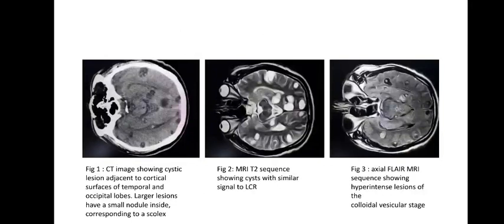The first image shows a CT image showing cystic lesions adjacent to the cortical surfaces of the temporal and occipital lobes, with larger lesions having a small nodule inside corresponding to a scolex. The second image shows an MR T2 sequence showing cysts with similar signal to CSF. The third image shows an axial FLAIR MR sequence showing hyperintense lesions of the colloidal vesicular stage.